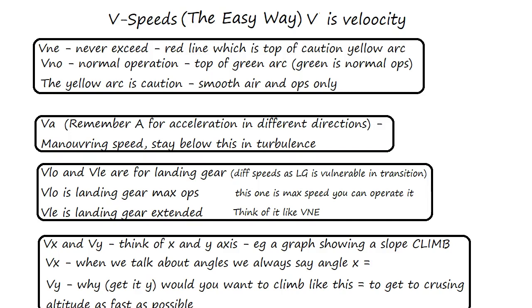VA - remember this - it's maneuvering speed. But how do we remember it's maneuvering speed? It should be VM, right? Remember it VA - A for acceleration, acceleration in different directions.